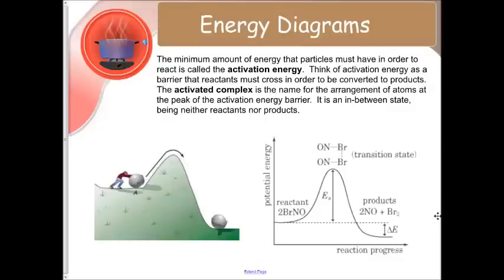Now, the other thing we want to talk about is the activated complex. This is the name for the arrangement of atoms at the peak of the activation energy barrier, kind of like at the top of the hill. It's an in-between state being neither reactants nor products. Our reactants have basically broken all the bonds and are ready to be reassembled. Our activated complex is kind of at the top of the hill and then it will proceed down and make products.